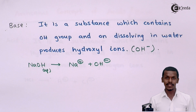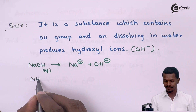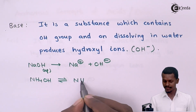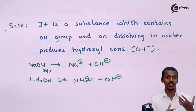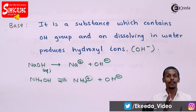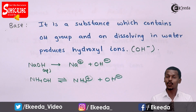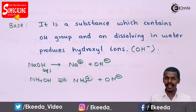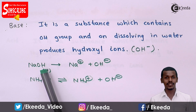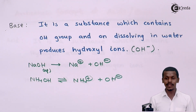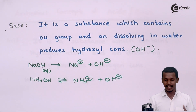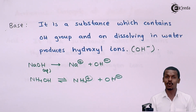That is the reason NaOH is called a base according to the Arrhenius concept — because it consists of a hydroxyl group and on dissociation gives OH⁻ ions. Similarly, NH₄OH on dissociation gives NH₄⁺ and OH⁻. Substances which contain an OH group and when dissolved in water produce OH⁻ ions are called bases. Now, why is NaOH not called an acid even though it contains an H atom? Because when dissolved in water it gives OH⁻ ions, not H⁺ ions — that's why NaOH is a base.